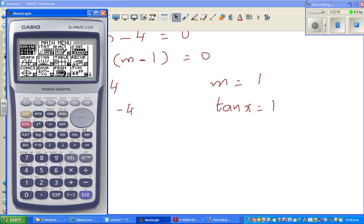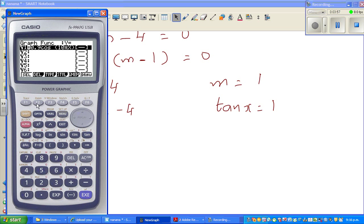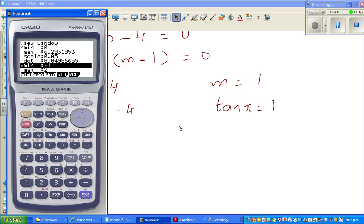So now you go to graph and type in, delete this, tan x. And my scale from 0 to 2 pi. 0 to 2 shift pi. And I want values like minus 4 and 1, so I'll put the y minimum as minus 5, to plus 5. Scale of 1 would do, and this is your tan graph.